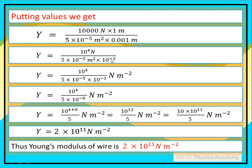10⁻⁵ اور 10⁻³ multiply ہوں گے تو 10⁻⁸ بن جائے گا۔ اس 10⁻⁸ کو اوپر لے جائیں گے تو 10⁺⁸ ہو جائے گا۔ 10⁴ × 10⁸ = 10¹² آ جاتا ہے اوپر، اور نیچے صرف 5 رہ جاتا ہے، unit newton per meter square۔ 10¹² کو 10 × 10¹¹ لکھ لیتے ہیں، 5 سے 10 divide کریں تو 2 آ جاتا ہے۔ Thus, Young's modulus of wire Y = 2 × 10¹¹ newton per meter square.